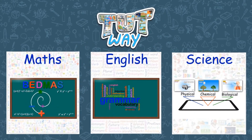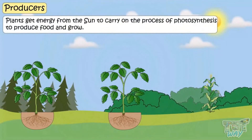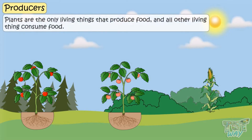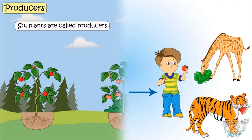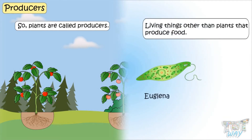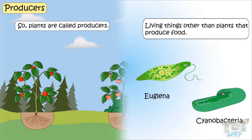Plants get energy from the sun to carry on the process of photosynthesis, and produce food and grow. So plants are the only living things that produce food. Rest all living things consume food, so plants are called producers. There are also some other organisms that produce food other than plants. Euglena and cyanobacteria are examples of microorganisms that can produce food through photosynthesis, and they are not plants. They are mainly found in pond water.